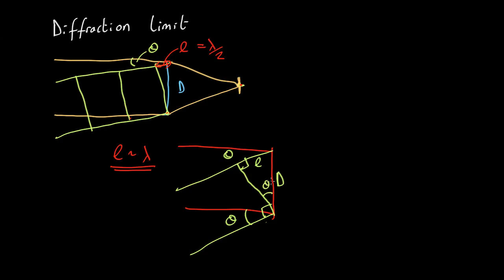So from trigonometry, this is a right angle triangle. The opposite is L, the hypotenuse is D, so sine theta equals opposite over hypotenuse, L over D.